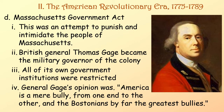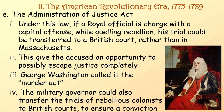The Massachusetts Governing Act was an attempt to punish and intimidate the people of Massachusetts. British General Thomas Gage became the military governor of the colony, and all of Massachusetts' own governmental institutions were now restricted. General Gage's opinion was, and I'm quoting him, 'America is a mere bully from one end to the other, and the Bostonians by far the greatest bullies.' The Administration of Justice Act provided that if a royal official was charged with a capital offense while quelling a rebellion, his trial could be transferred to a British court, giving the accused an opportunity to possibly escape justice completely. George Washington called it the 'murder act.' The military governor could also transfer the trials of rebellious colonists to British courts to ensure a conviction.